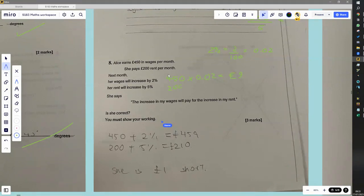200 times 0.05, what's that? 200 times 0.05 is 10. It says her increase in wages will pay for the increase in rent. No, it won't. And as you said, she's £1 short.